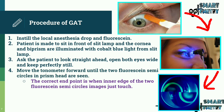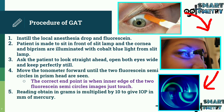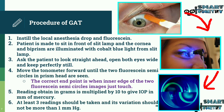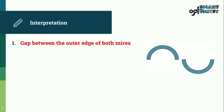Ask the patient to look straight ahead, open both eyes wide, and keep perfectly still. Move the tonometer forward until the two fluorescent semicircles in the prism head are seen. The correct endpoint is when the inner edges of the two fluorescent semicircle images just touch. The reading obtained in grams is multiplied by 10 to give IOP in mmHg.